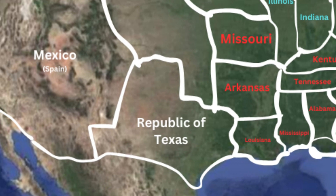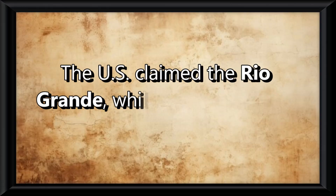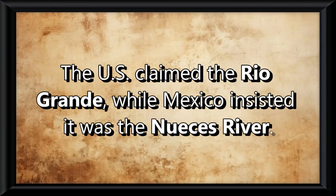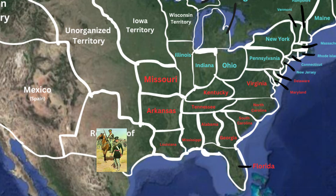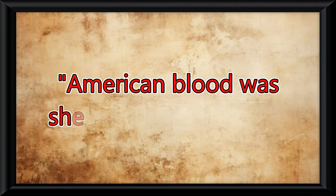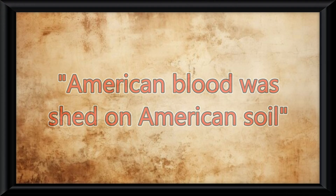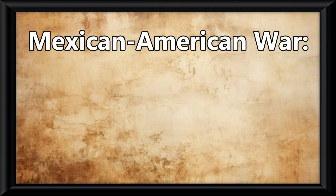But here's the thing: as America expanded, tensions with Mexico escalated over the Texas border. The US claimed the Rio Grande, while Mexico insisted it was the Nueces River. Polk sent troops into the disputed Texas-Mexico border, and after a skirmish he claimed, quote, "American blood was shed on American soil." He used this as a justification to declare war in what was known as the Mexican-American War.